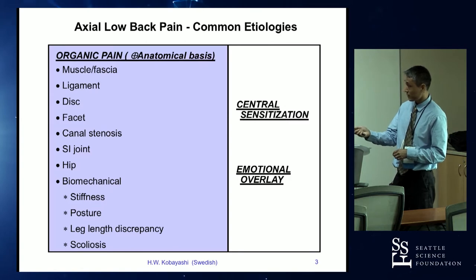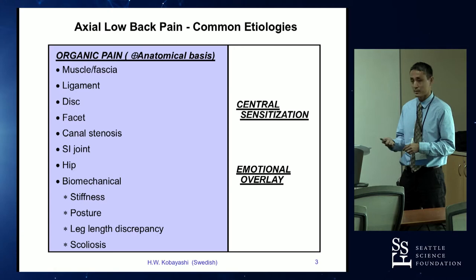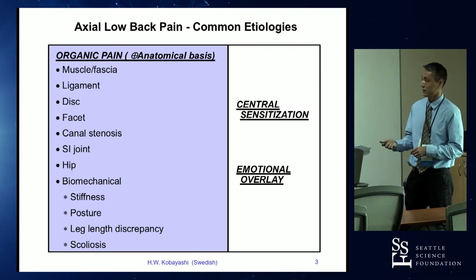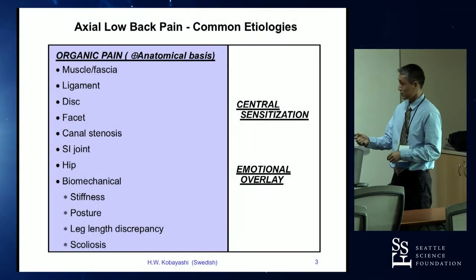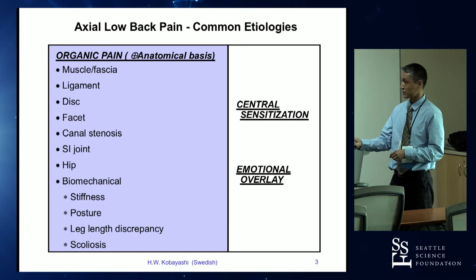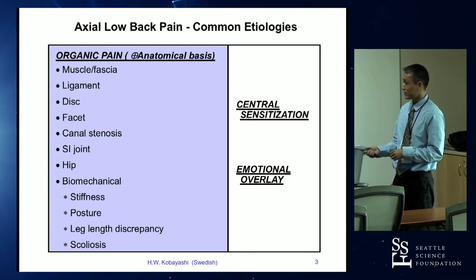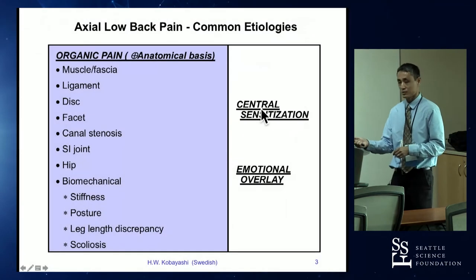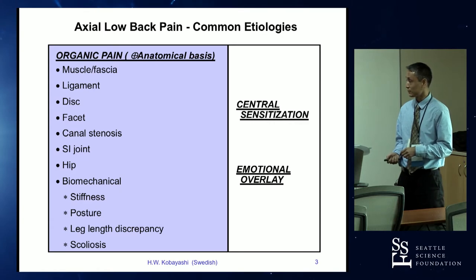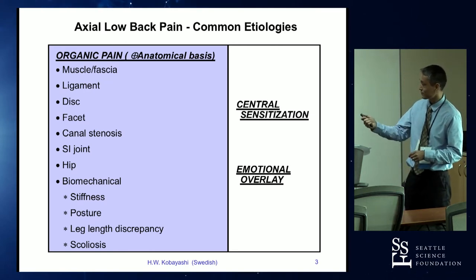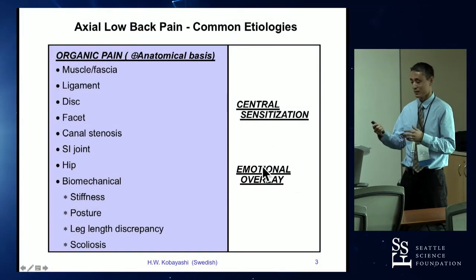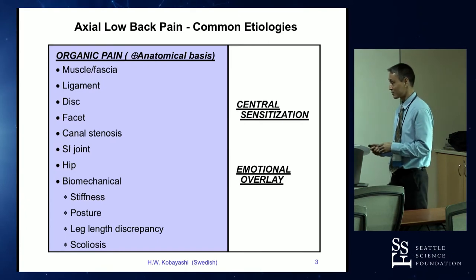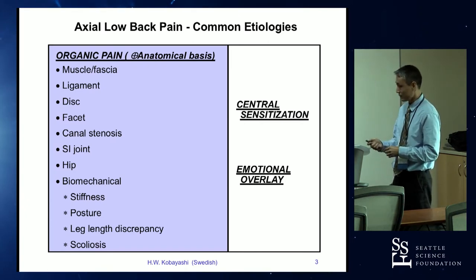So we're going to talk about a basic concept first. Axial low back pain, as you all know, has many different etiologies. There are structural anatomical sources of pain — we're going to focus on the facet today — but there's obviously myofascial pain, discogenic pain, SI joint, etc. On the right-hand side is the non-structural component: central sensitization syndrome, emotional overlay. The longer I practice, the more this right side of the diagram plays a larger role in so many of my patients, and that's where it becomes challenging.